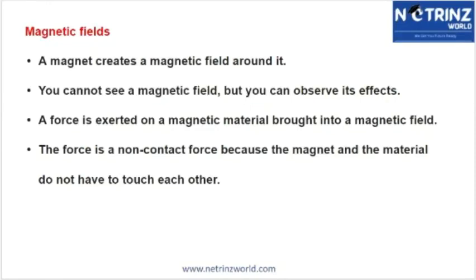The magnetic field is a force of attraction around the magnet — you cannot see it, but you can conduct certain activities to observe it. When you bring certain metallic objects into the magnetic field, you will see changes. This force is a non-contact force because the magnet and the material do not have to touch each other.